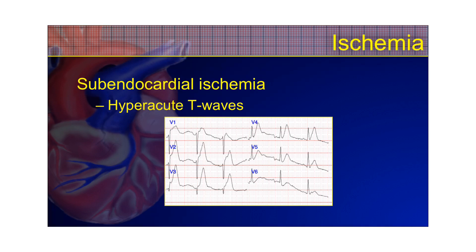Subendocardial ischemia, at the very beginning of the evolution, is going to show up on an EKG as hyperacute T-waves. If you look at these T-waves, you'll see that they are symmetrical. A symmetrical T-wave is never normal — it doesn't mean it's an MI, but it means there's some sort of pathology. It could be hyperkalemia or one of many different things, and it should have a wider base than hyperkalemic T-waves. It's symmetrical, broad-based, and very tall, despite the size of the QRS. You could have a small QRS complex with very tall T-waves — it's not proportionate like normal T-waves. These are considered hyperacute.